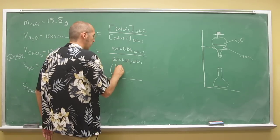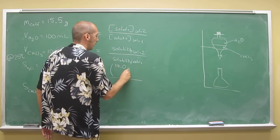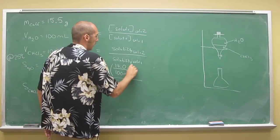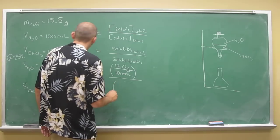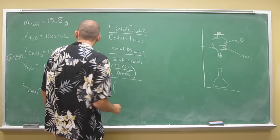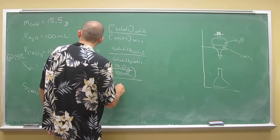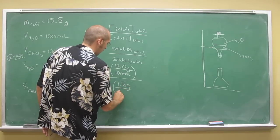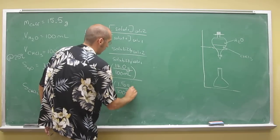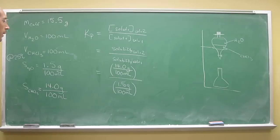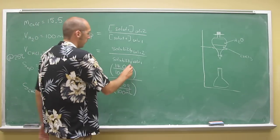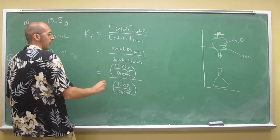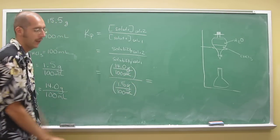We'll say 14.0 grams divided by 100 mLs—that's grams of caffeine per mLs of chloroform—divided by 1.5 grams of caffeine per 100 mLs of water. Grams will cancel and mLs will cancel. That'll give us Kp, which is a unitless value.